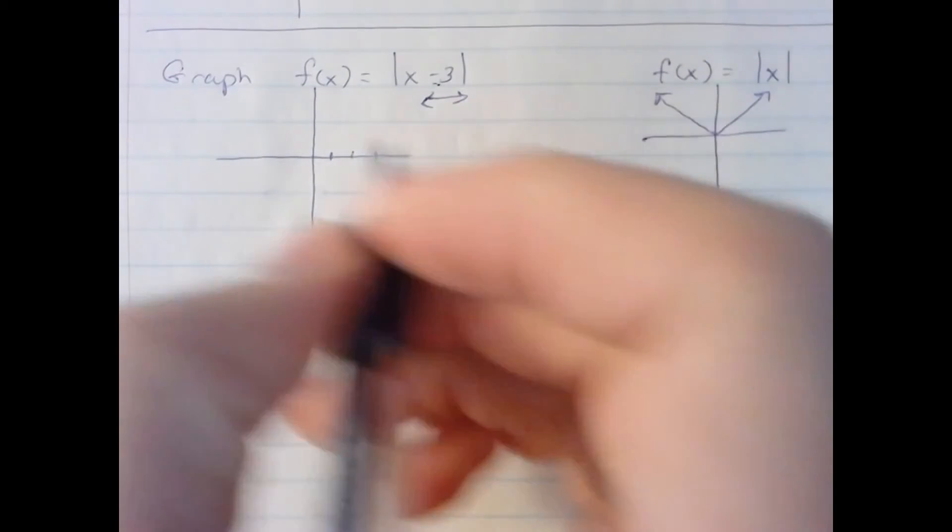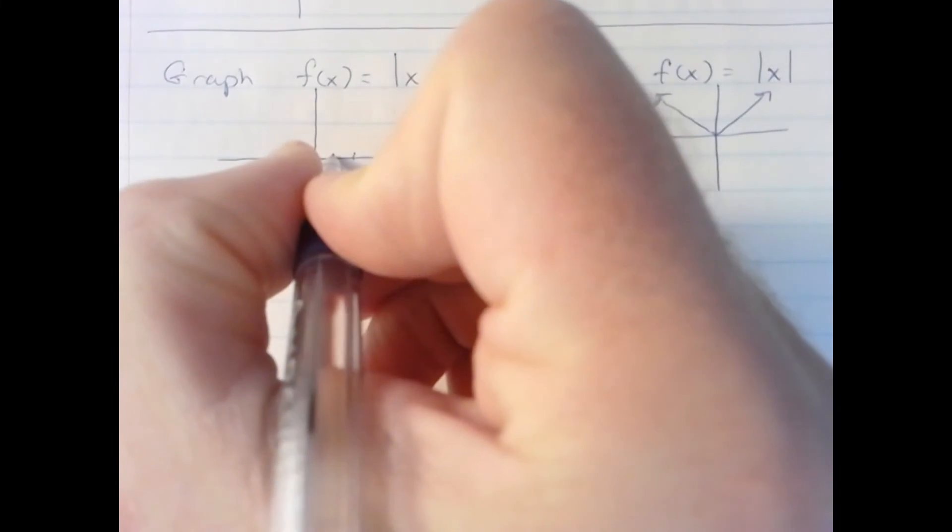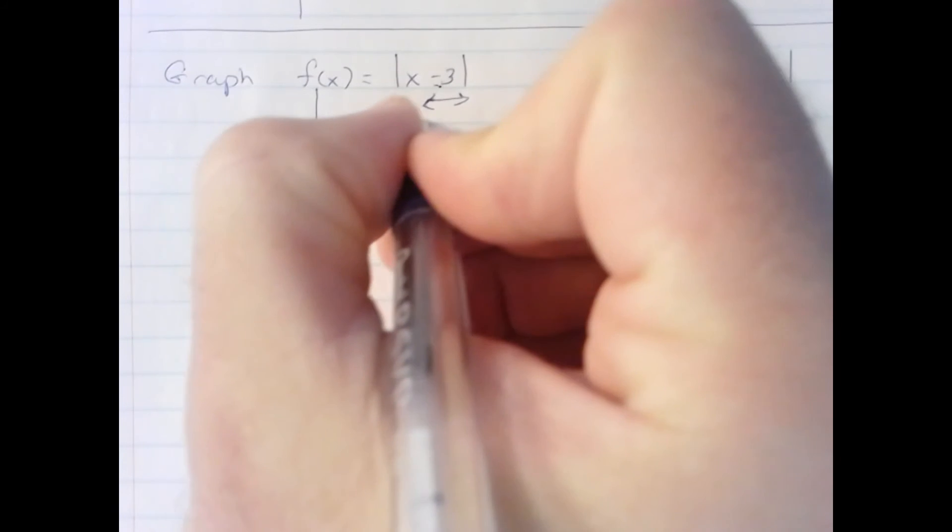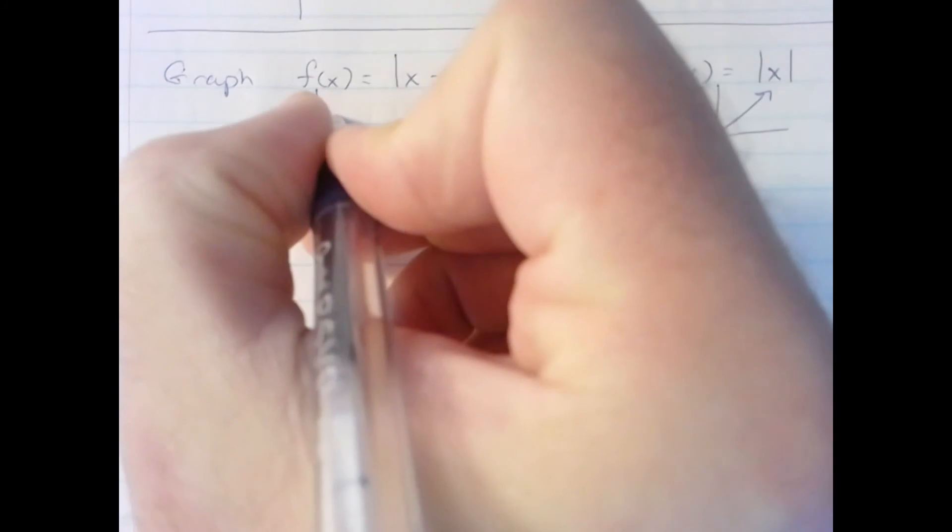So it looks like the parent graph, but the vertex is 3 units over. And it's just shifted to the right like that.